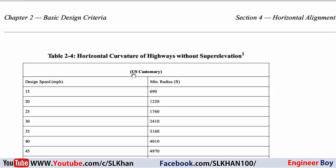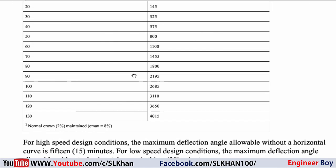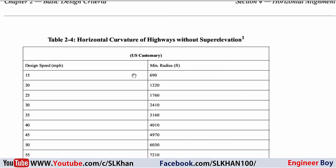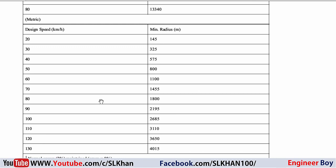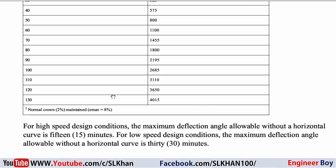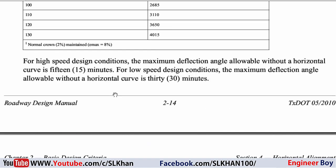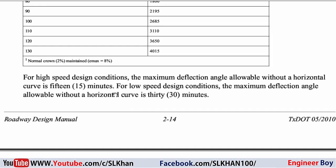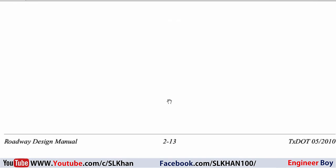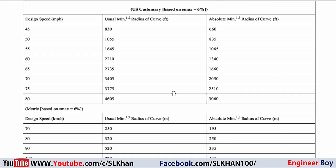Going further down, there are also tables for design speeds and minimum radii based on different conditions — such as a normal crown of 2% and emax of 8%. These are from the road design manual and basic design criteria. If you have different parameters, you can of course calculate the radius of curve using the appropriate formulas.